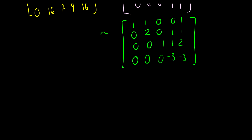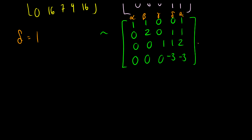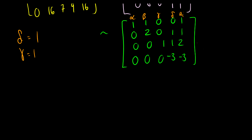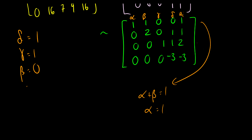At this point we can start getting coefficients. The first column is alpha, second is beta, third is gamma, fourth is delta, and the last is our value. From row 4: -3·delta = -3, so delta = 1. From row 3: gamma + delta = 2, and since delta = 1, gamma = 1. From row 2: 2·beta + delta = 1, so 2·beta = 0 and beta = 0. From row 1: alpha + beta = 1, and since beta = 0, alpha = 1.